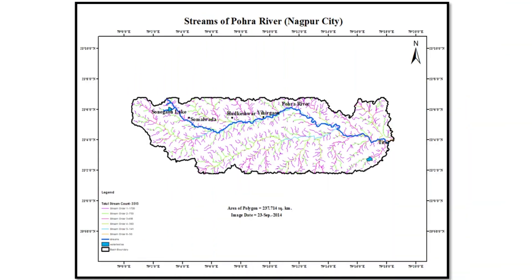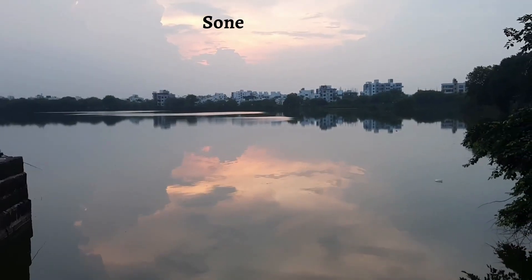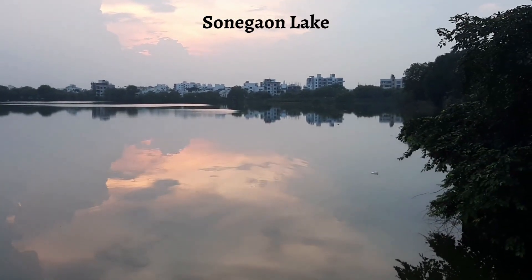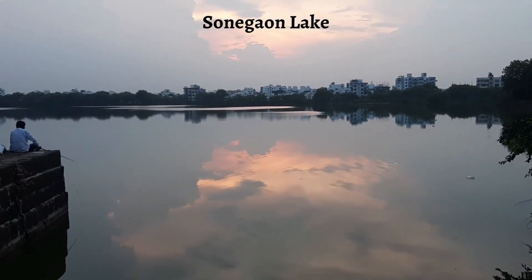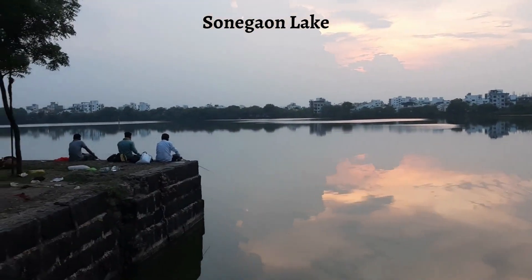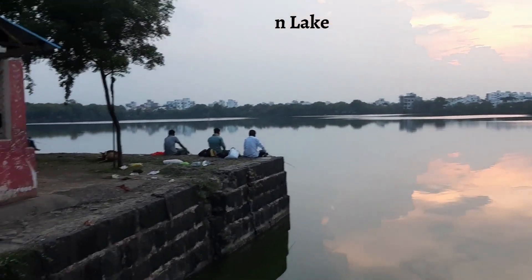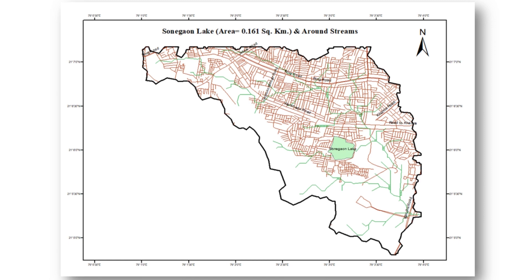The study area of Pohara River is around 237 square kilometers and more than 3,500 streams have been observed. The river is believed to originate from Sonegaon Lake, but preliminary investigations reveal it is also linked with Lava Hills. Due to encroachment of streams in and around Sonegaon Lake, it was difficult to trace streams through available satellite images. Further studies are needed in this regard.